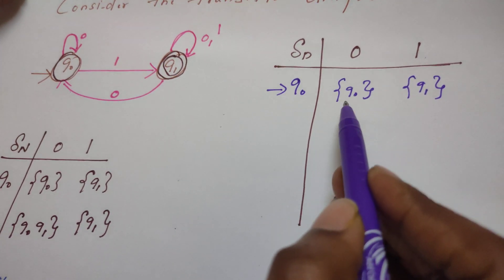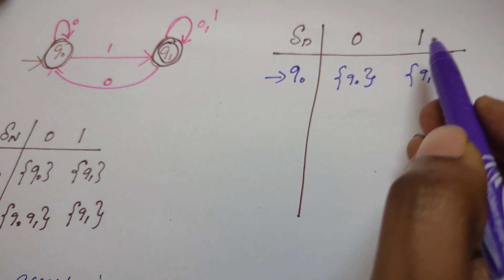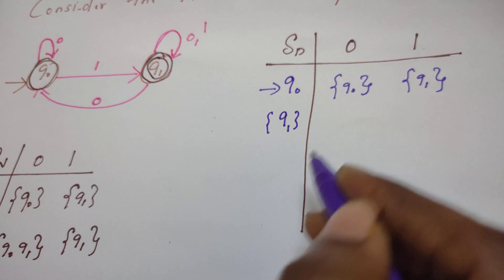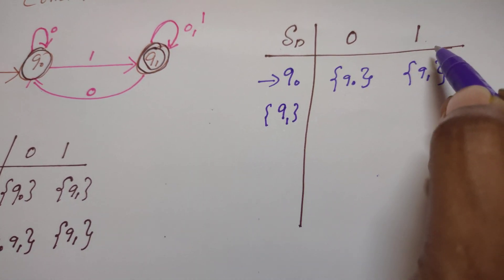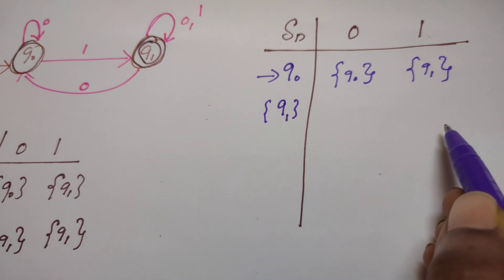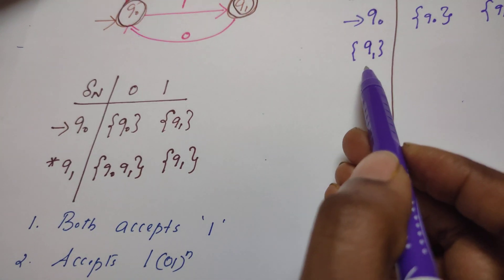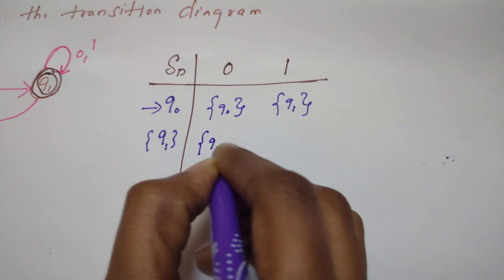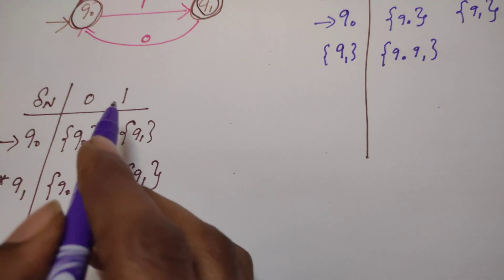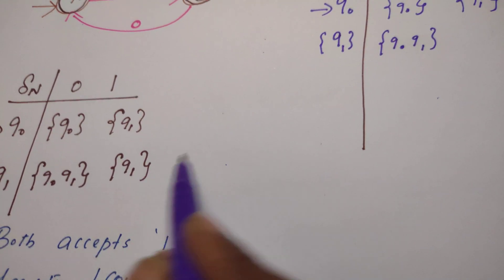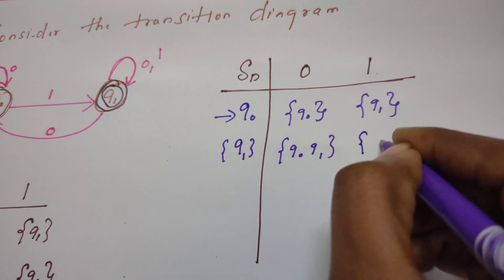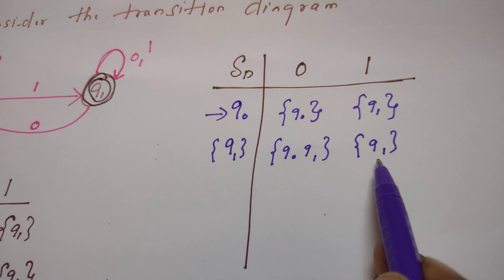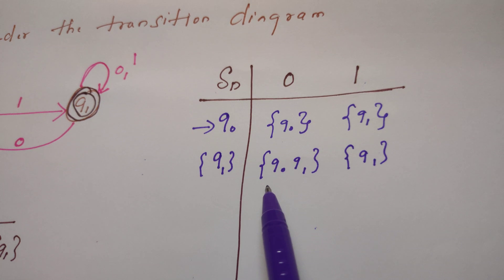From the start state on reading 0, it reaches its start state itself. From the start state on reading 1, it goes to a new state Q1. So let us continue to define transitions from Q1. From Q1 on 0 and from Q1 on 1, we have to identify these by referring to the NFSM transition table. From Q1 on 0, it goes to Q0 and Q1. From Q1 on 1, in the NFSM it goes to Q1, so in the DFSM also it is the same — from Q1 on 1, it goes to Q1. But from Q1 on reading 0, it enters into a new state {Q0, Q1}.